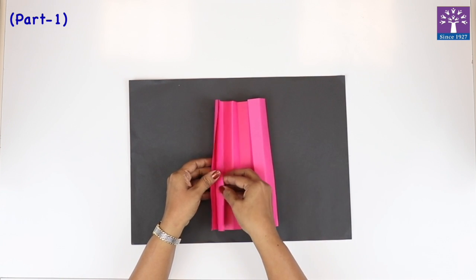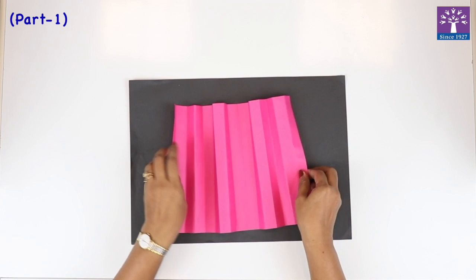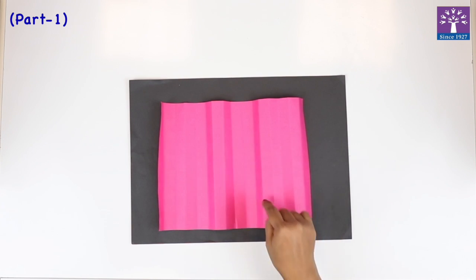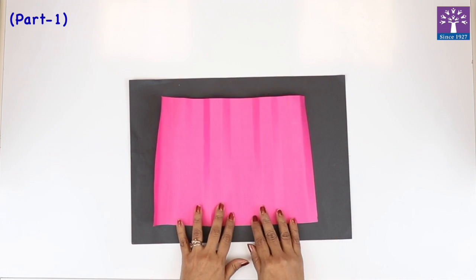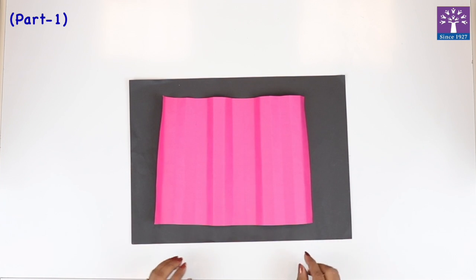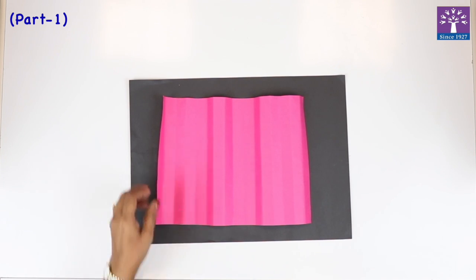Okay, so we folded our paper four times. See, I'll open it for you: one, two, three, and four. Can you see these crease lines? All these lines. Why did we fold the paper? Because we wanted to divide the paper into equal strips.